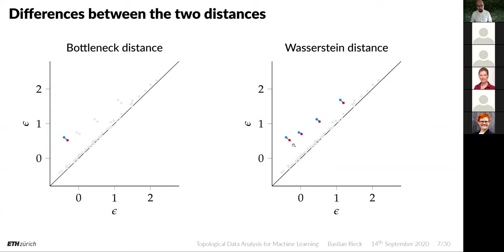In the illustration, red points come from one diagram, blue points from the other. In the bottleneck distance, we look at the supremum between two points in a bijection, whereas in the Wasserstein distance, we sum over all features. The gray points — the remainder — are projected to the diagonal, which incurs a cost accounted for by the optimization algorithm. This makes it possible to compare two diagrams of different cardinalities.